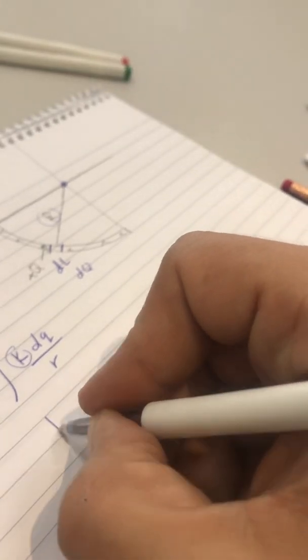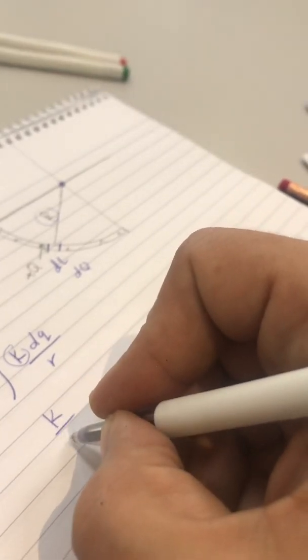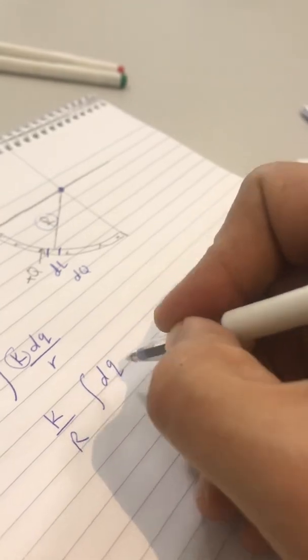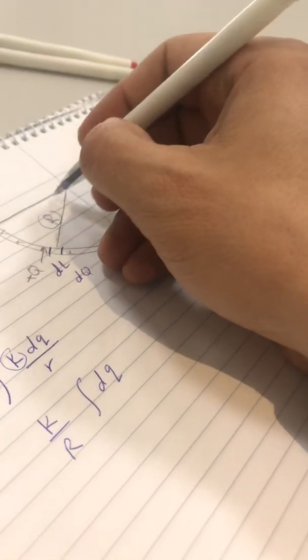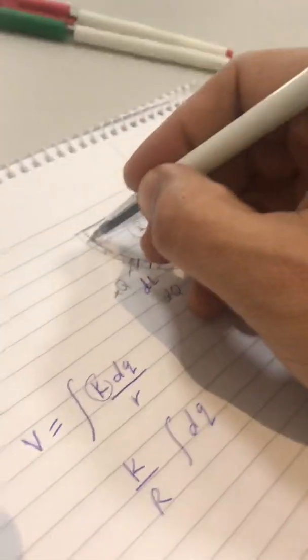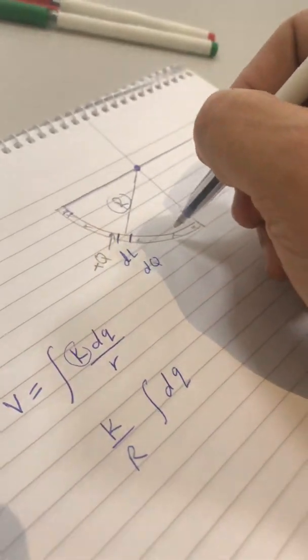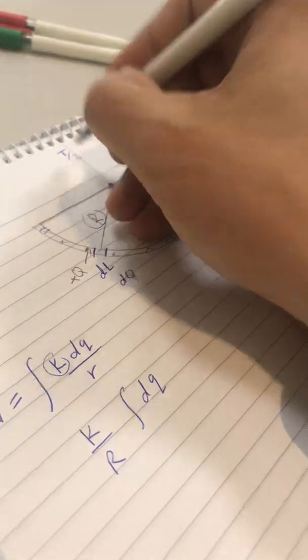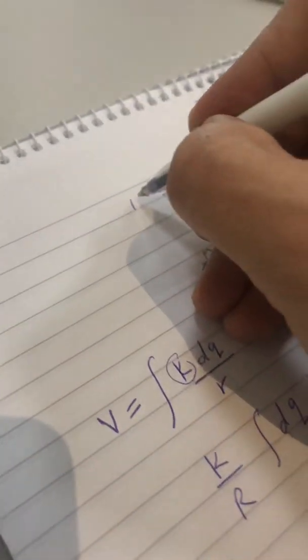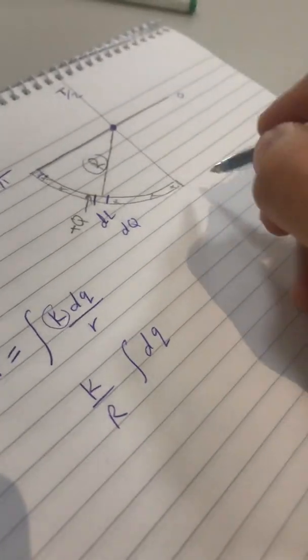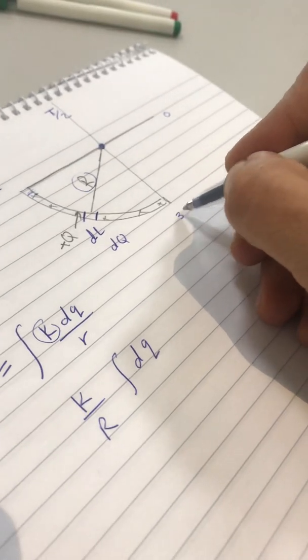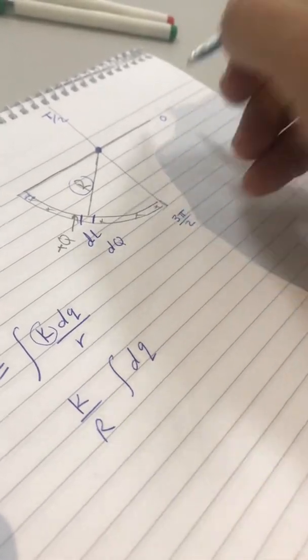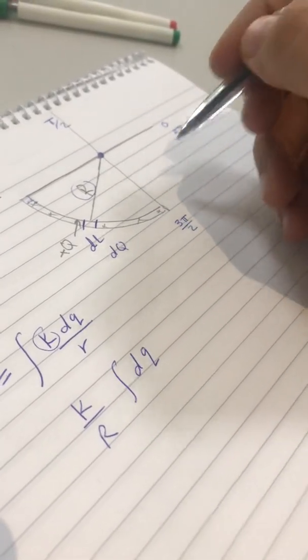So it will be K over R integration DQ. Now, we want to take the DQ from this part, from here until here. So, if this is 0, this is Pi over 2, this one will be Pi, and this one will be here, 3 Pi over 2. And again, we'll go to 2 Pi.